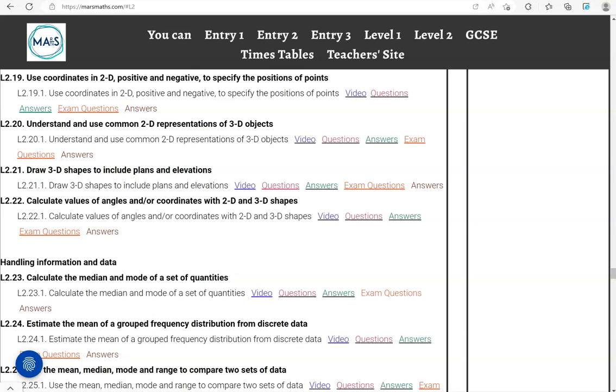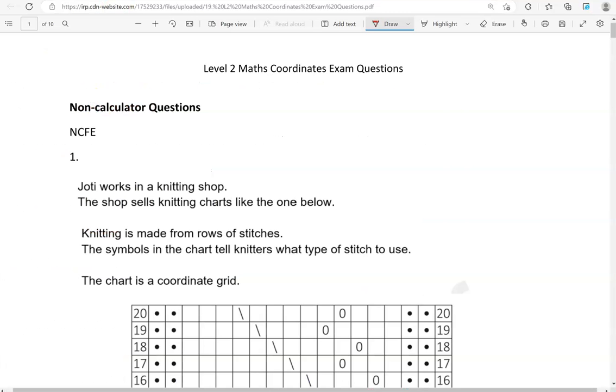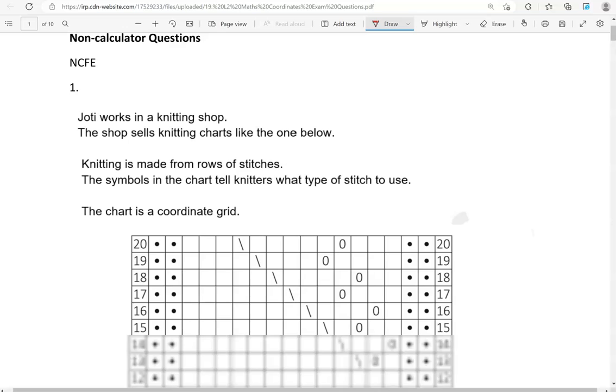In this video, we'll go through exam questions that cover the criteria and use coordinates in 2D, positive and negative, to specify the positions of points. You can locate the questions on the massmath.com website under level 2. The questions come from different exam boards. We'll start with the non-calculator questions and then we'll move to the calculator questions. Here is the first one.